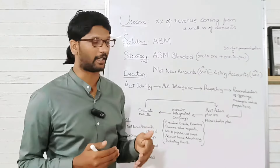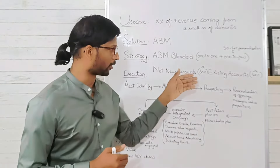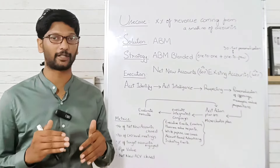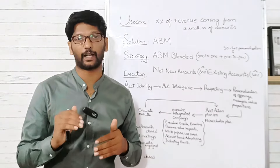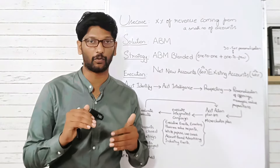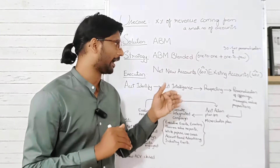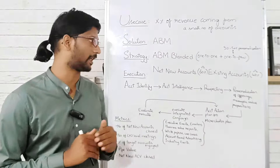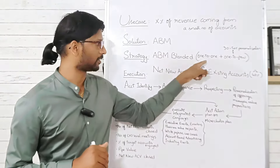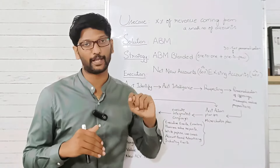The number of net new accounts and existing accounts that you select depends on your current existing accounts. If you see that a lot of current existing accounts are well-known and potential enough to be tapped, then you will have a higher percentage of existing accounts than net new accounts. ABM Strategic will typically have more existing accounts than net new accounts.